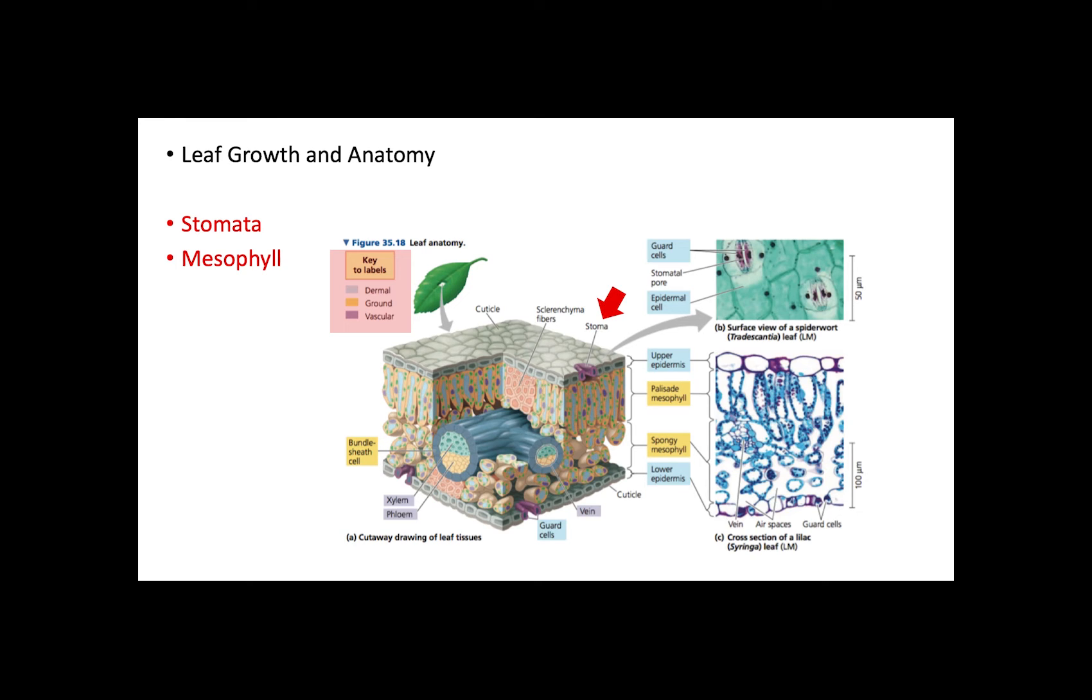The ground tissue of a leaf is also known as mesophyll, located between the epidermal layers. This tissue is mainly composed of parenchyma cells specialized for photosynthesis.